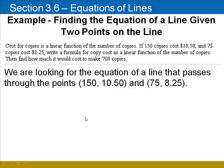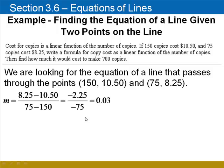So essentially we're looking for the equation of a line that passes through (150, 10.50) and (75, 8.25). Finding the slope using the slope formula, we see that the slope is 0.03. That essentially means for each additional copy, you pay 3 cents.